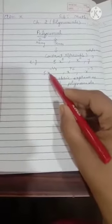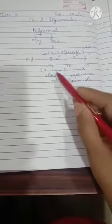What if the power of the variable is not a whole number? You may consider 5x raised to power minus 1/3, x raised to power 1/2, x raised to power minus 5. These types of statements are called algebraic expressions only, but they are not called polynomials.